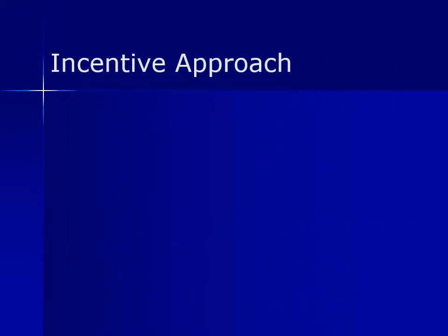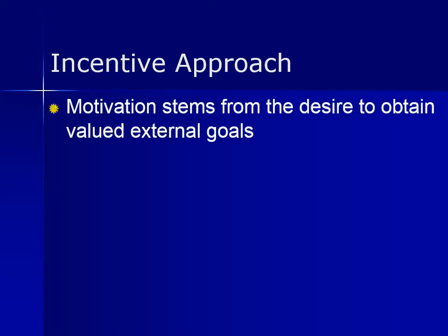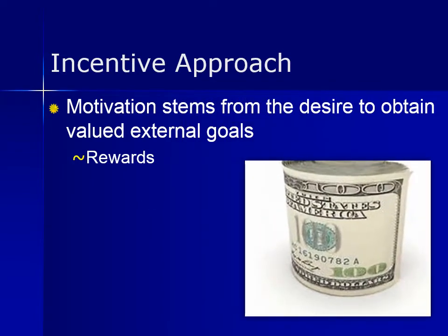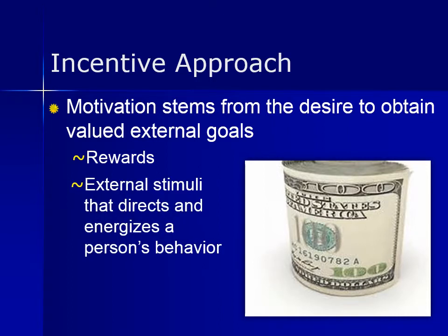Incentive theory is one where motivation is based on the desire to get an external goal. It suggests that we are motivated to do things out of a desire for reinforcement, incentives, or rewards. Sometimes we are motivated by internal desires and wishes, but at other times our behaviors are driven by desires for external rewards. We may want money, fame, love, acclaim, even food. For example, you might be motivated to go to work each day for the monetary reward of being paid, or study hard so you can get good grades, or exercise so you can have that extra piece of cake.